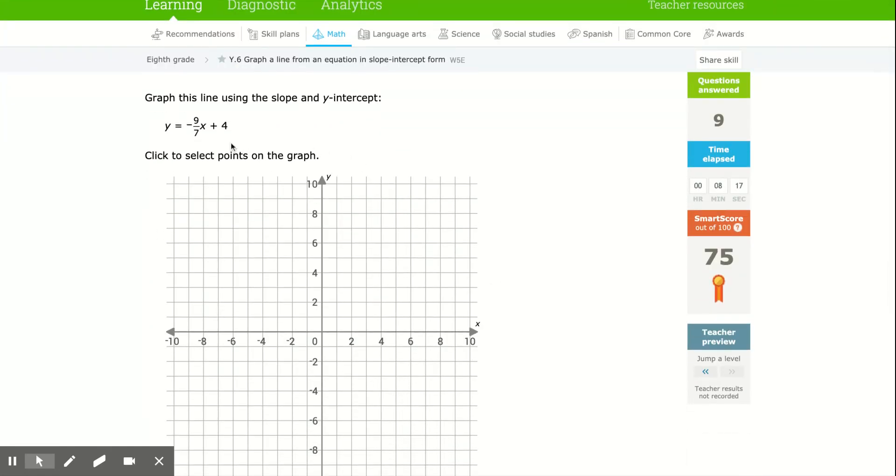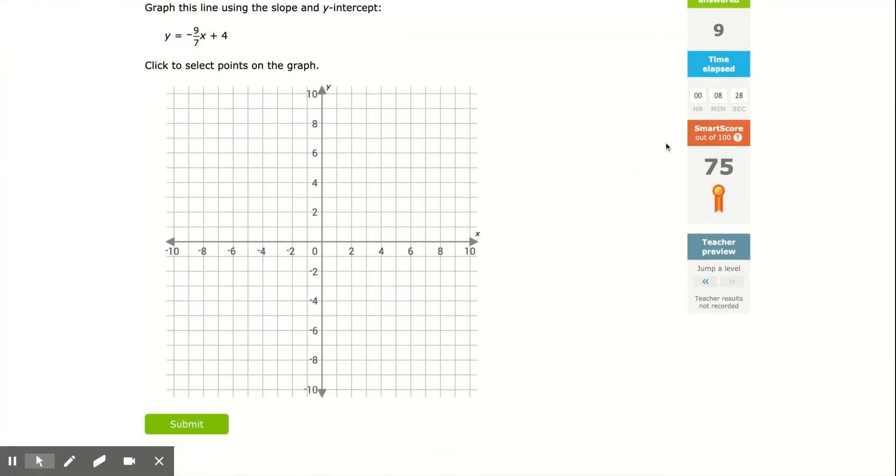So remember, if there's no b, start at the origin. If there's no leading x term, the slope is 0 and you have a horizontal line. Hopefully you catch that and you paid attention that long. But if you struggle, let me know.